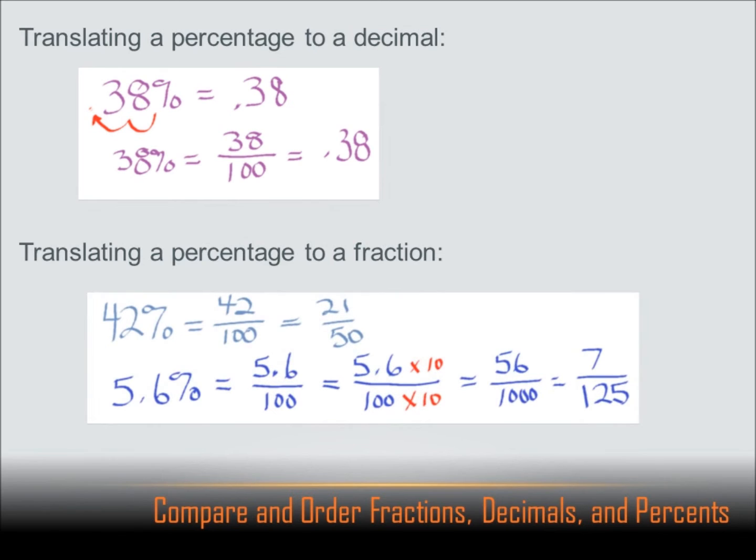How about changing a percent to a fraction? Well, that's not that hard either. Remember, 42%, that's 42 per 100, 42 over 100, and I can simplify 42 over 100 to 21 over 50. I just divided the top and the bottom by 2, and I got 21 over 50. How about the second one? I've got 5.6%, and I want to change that into a fraction. Well, that's 5.6 per 100, so it's 5.6 over 100. 5.6, that's kind of an awkward number to have in a fraction. So to get rid of that decimal point, I need to multiply the 5.6 by 10, and if I'm going to multiply the top of the fraction by 10, I've got to multiply the bottom of the fraction by 10. So now it becomes 56 over 1,000, and I can simplify that to 7 over 125.